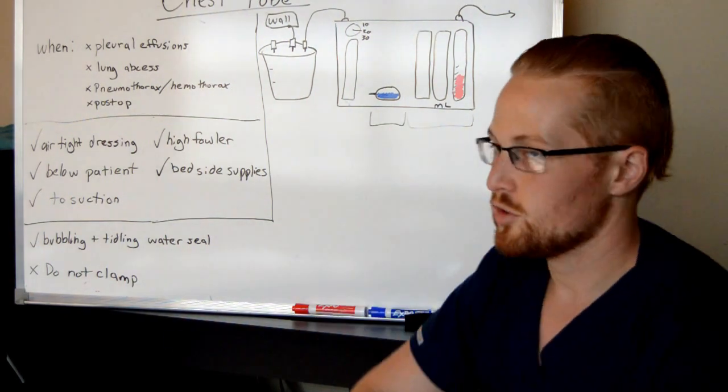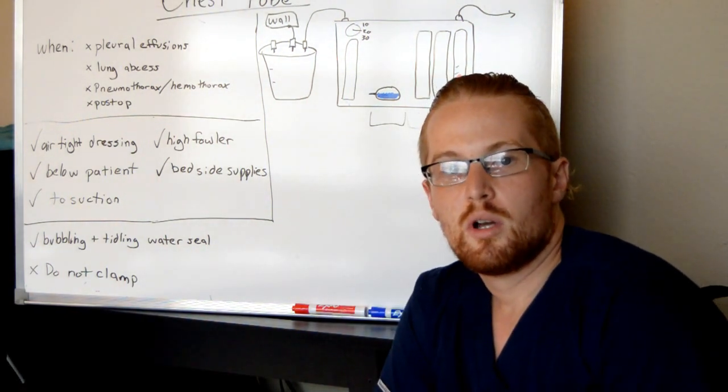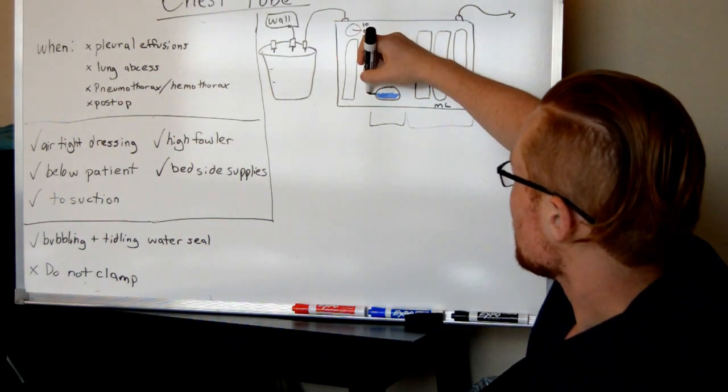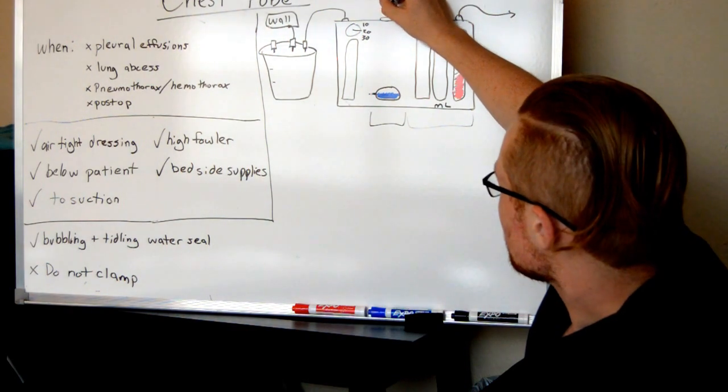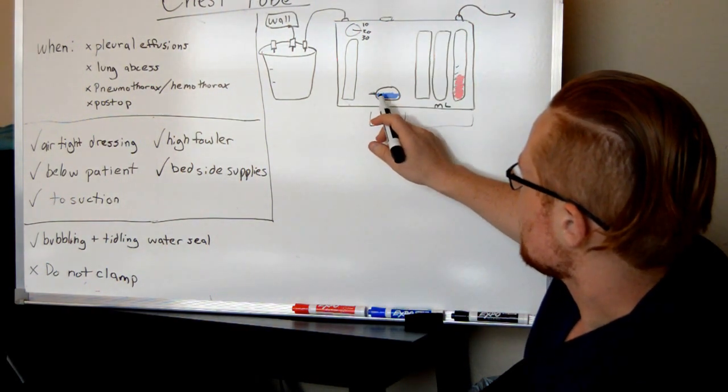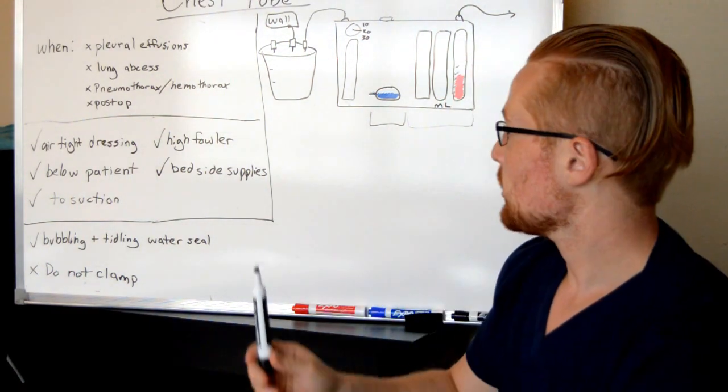This here is the water seal, and this is how you know that you're getting good suction. It usually has a mark here and a little place where you can fill it right on the top. And you want to make sure you have it level with that mark, and that's how you know you have enough suction. We'll talk a little bit more about the water seal in a minute.